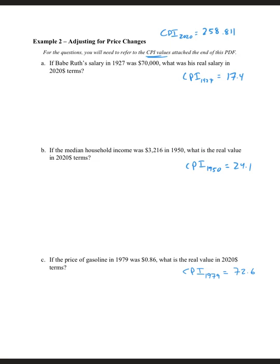So how do I solve this? If I want to know what Babe Ruth's real salary would be in 2020, adjusting the 1927 salary into 2020 dollar terms, Babe Ruth in 2020 equals the amount it was before in 1927, multiplied by a ratio of CPIs. It's always the CPI that you want - in this case CPI 2020 - divided by the CPI of the data you have, which is 1927.